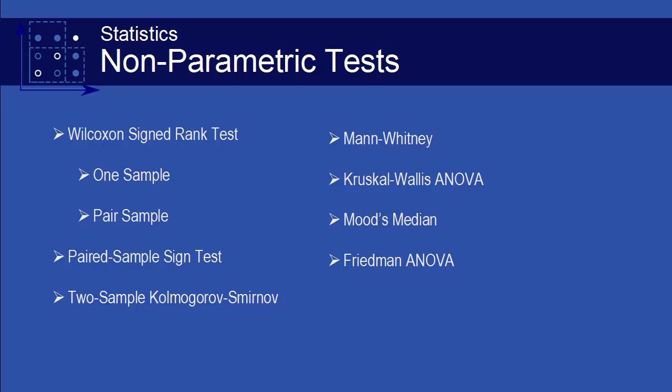Non-parametric tests are only available in Origin Pro. These include tests for one-sample, paired samples, two-samples, multiple-independent samples, and multiple-related samples.